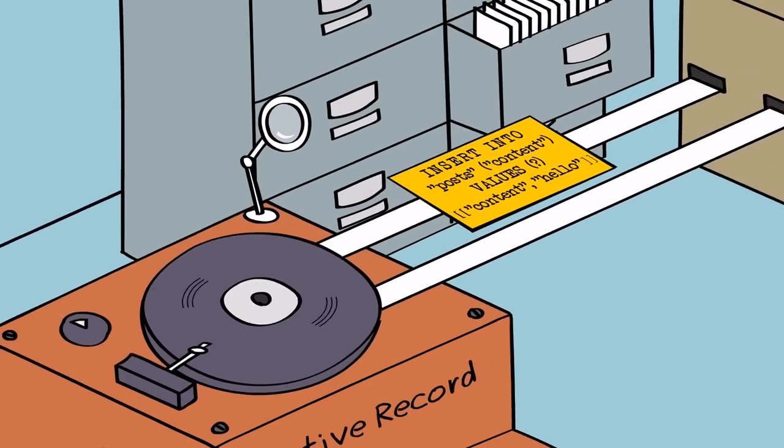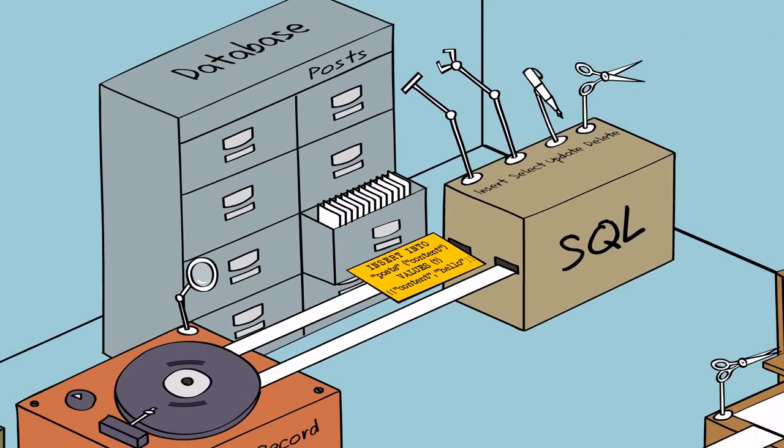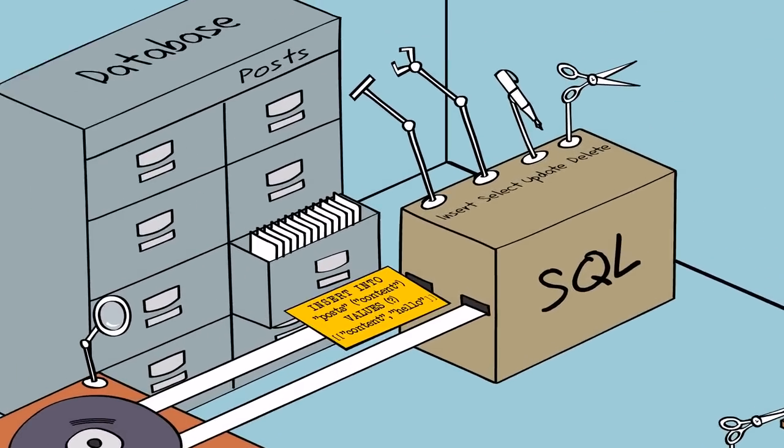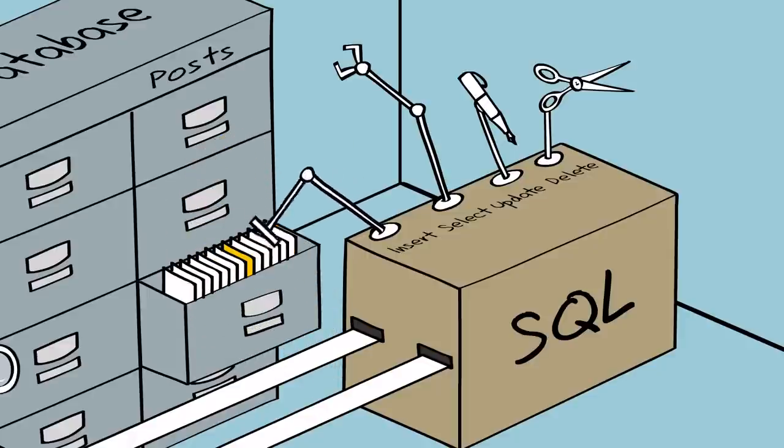the model sends an SQL card to the SQL machine to save the post. The SQL machine follows the given instructions and inserts a new post into the database.